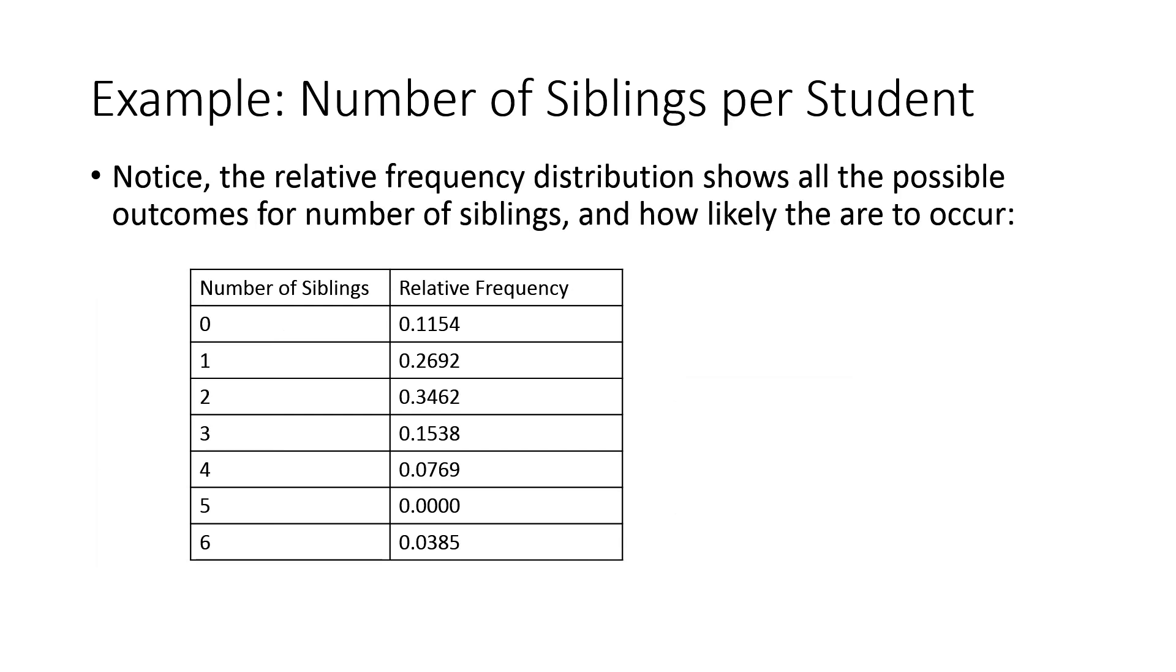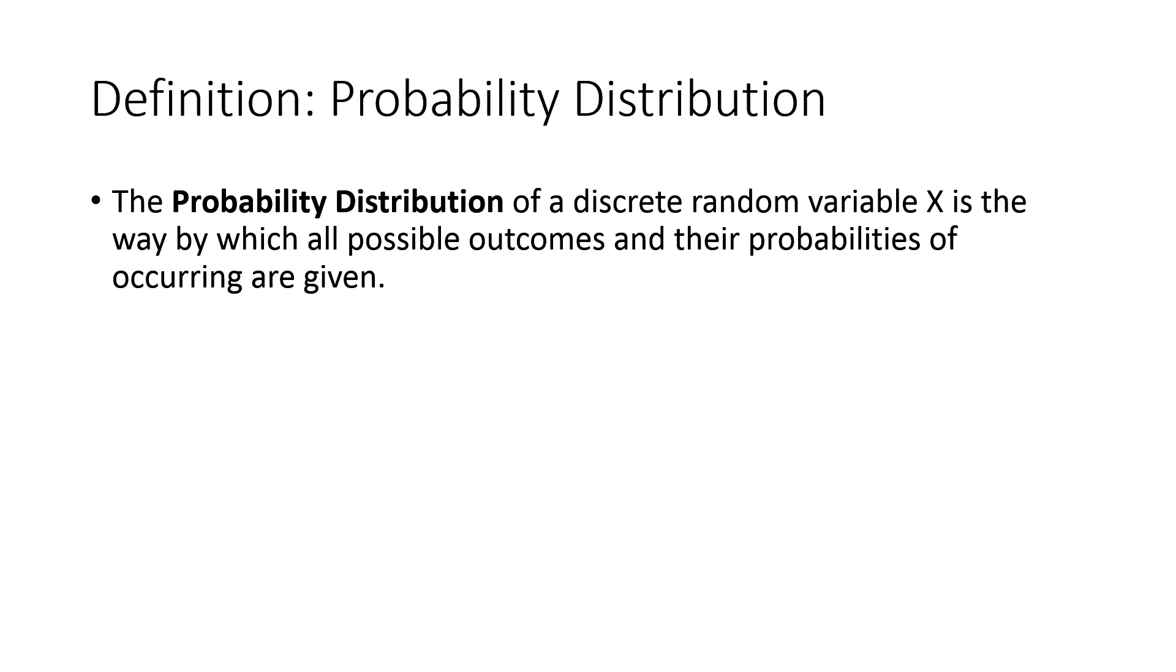If you notice, when we turn this into a relative frequency distribution, what we actually have now is we have sort of like a probability chart. If I was going to randomly select a student from the classroom, there's about an 11, 11 and a half percent chance that I'd end up with someone with no siblings. There's about a 15% chance I'd end up with someone that has three siblings. And actually, we would have a name for this. We would call this chart the probability distribution of the number of siblings if you're going to randomly select one student.